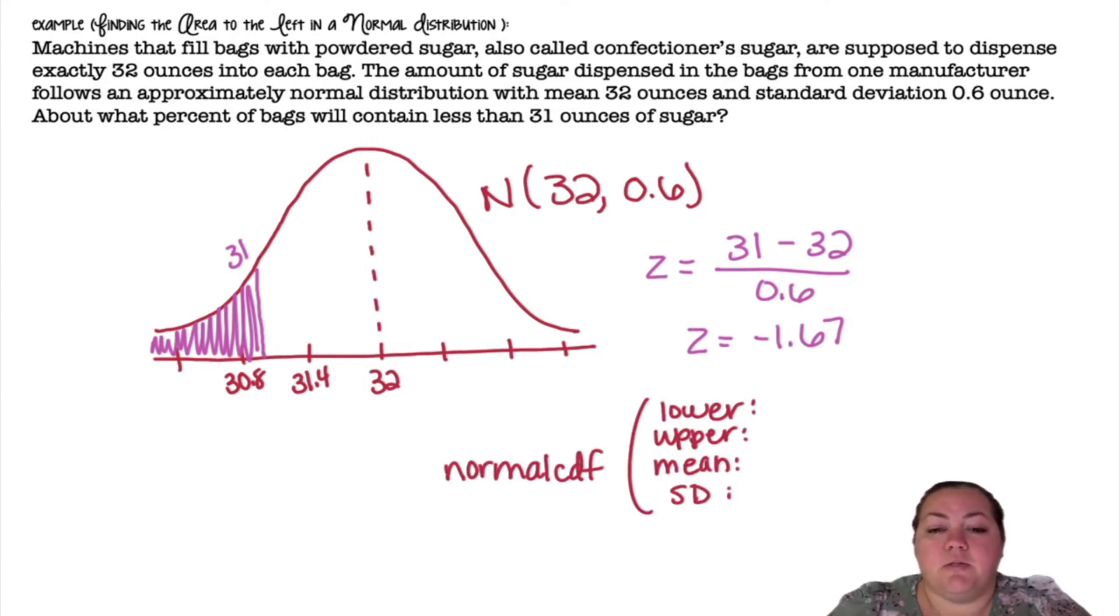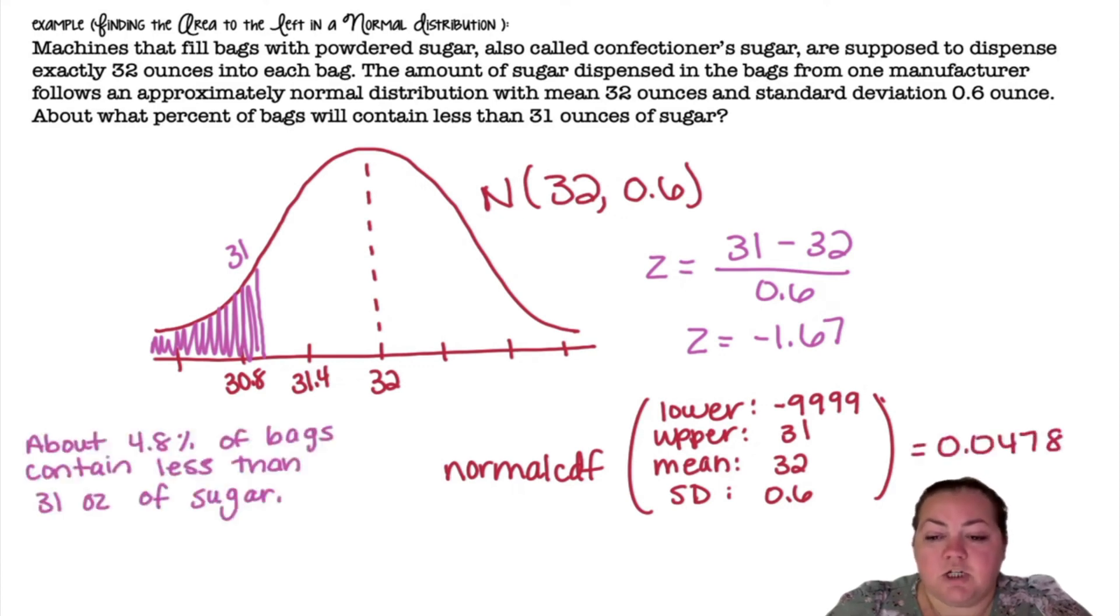If I'm using the calculator I'm going to do a normal CDF. My lower bound is going to be negative 999, it's really going to negative infinity. My upper bound is going to be 31. My mean 32 and my standard deviation 0.6, which gives me 0.0478 or about 4.8 percent of the bags contain less than 31 ounces of sugar.